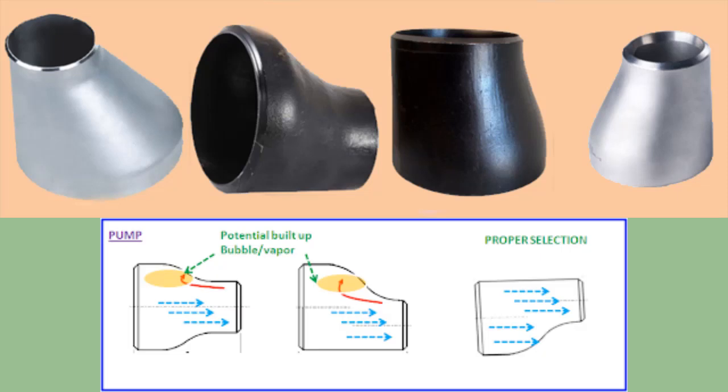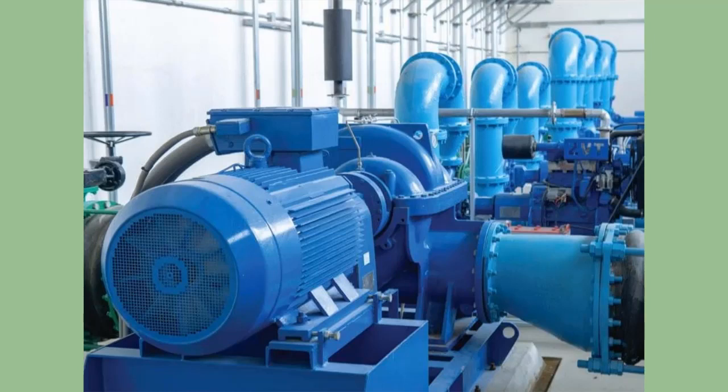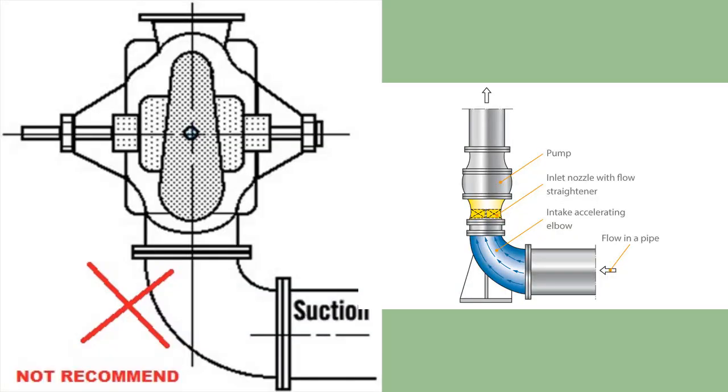Number three, use eccentric reducers on the suction side. Consider using eccentric reducers on the suction side of the pump when a pipe size transition is required. Install the flat side of the reducer on the top when fluid is coming from below the pump.